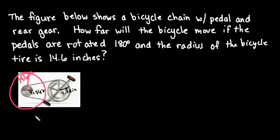What we want to know is what is our forward distance that this bicycle will move if we rotate the pedals 180 degrees. 180 degrees means we're going to turn this pedal halfway around, and we want to see what happens to the forward distance of the bicycle.